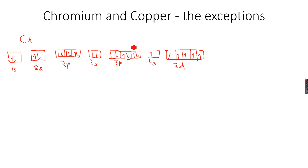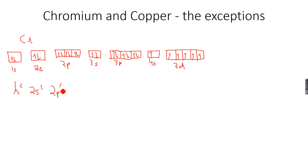Chromium and copper are the only exceptions for this case. So the electronic configuration of chromium becomes 1s2, 2s2, 2p6, 3s2, 3p6, 3d5, 4s1.